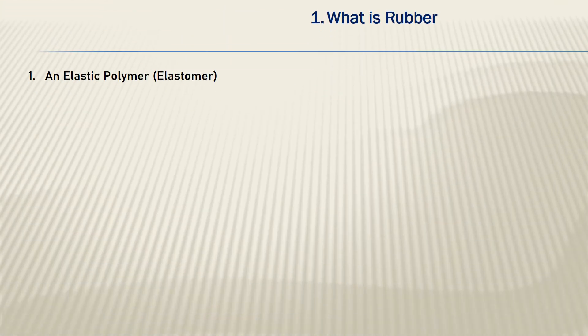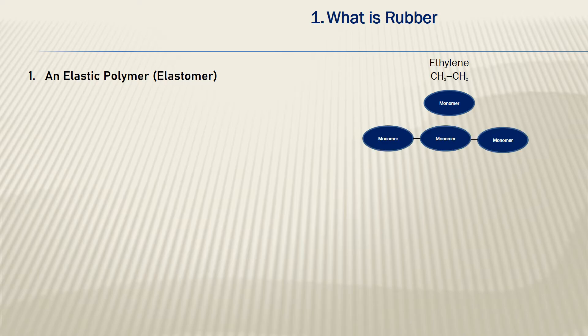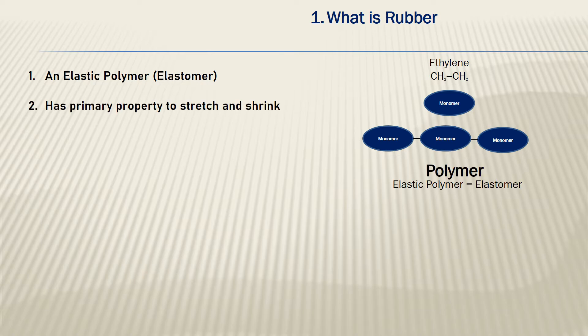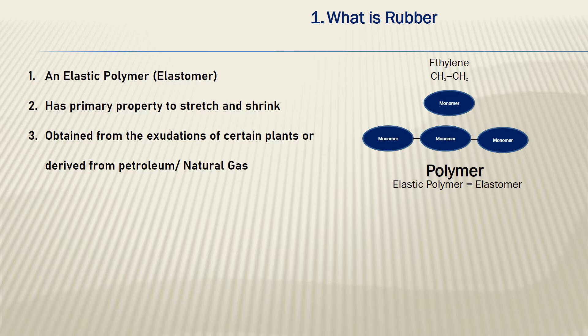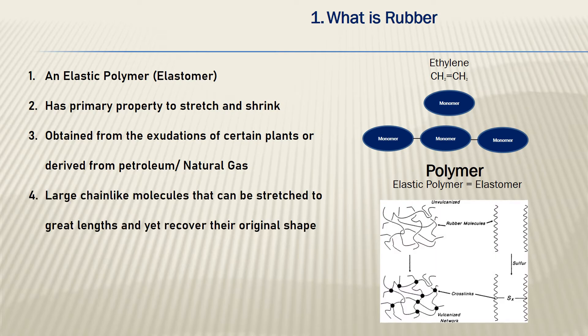Rubber is an elastic polymer, also called an elastomer. A small molecule is called a monomer, and multiple monomers are connected with each other through chain formation to become a polymer. Rubber is a polymer, but it has the primary property to stretch and spring back. Due to this property of easy stretching and recovery, it is called an elastic polymer, that is, an elastomer. It is derived from certain plants or from petroleum or natural gas. It has a large chain-like molecule in the linear direction and can be easily stretched and recover its original shape.